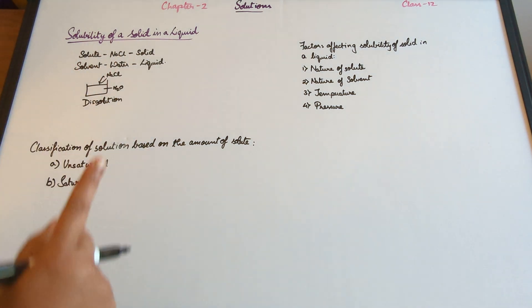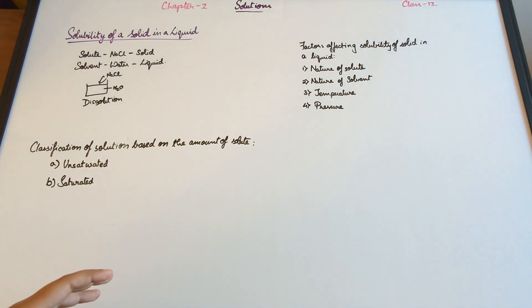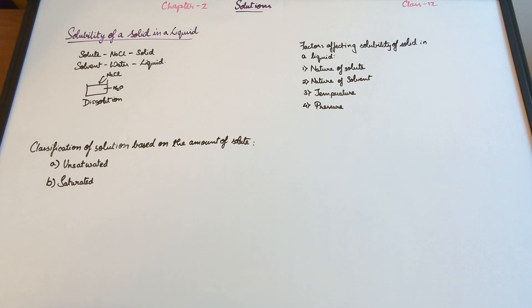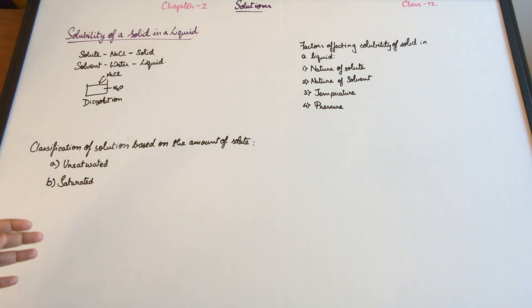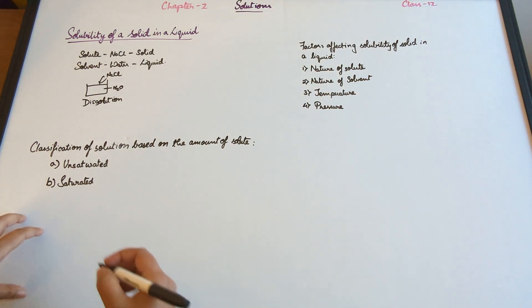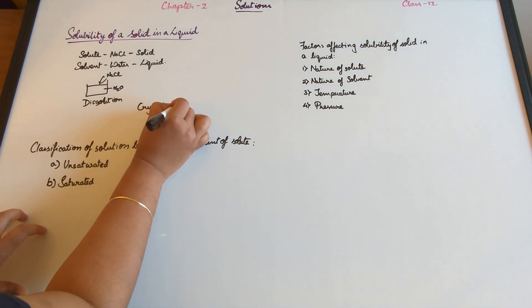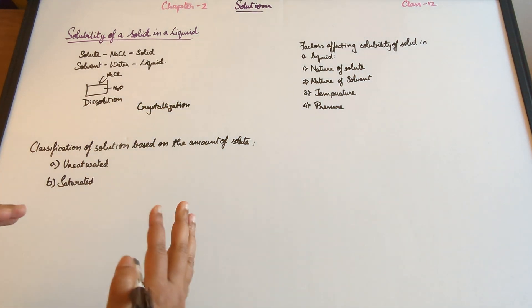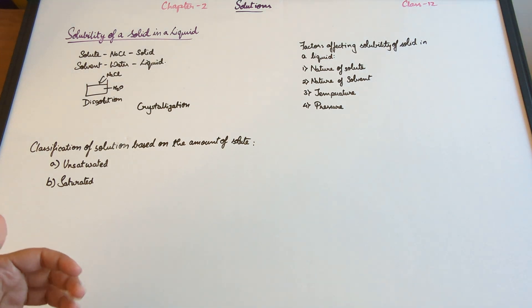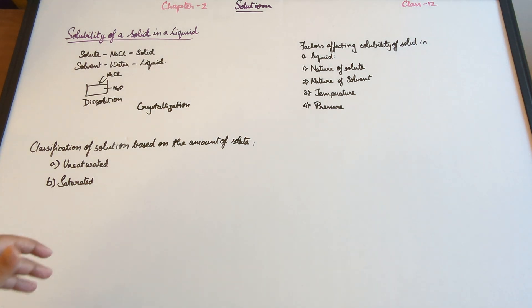So dissolution is the first process: when you have salt and mix it with water, it disappears — that is dissolution. Another process that happens is called crystallization. Dissolution and crystallization are opposites. Dissolution is the process where sodium chloride is getting dissolved into the water.